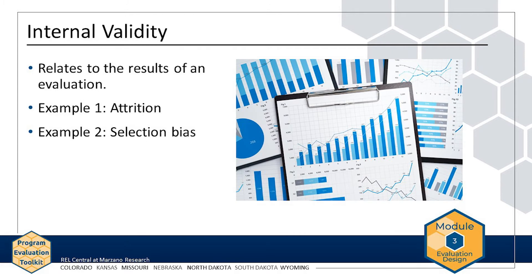First, let's look at internal validity, which relates to the results of an evaluation. At its most basic, internal validity involves asking whether the claims about the characteristics or effectiveness of a program are true. Internal validity can be threatened by problems in the design, such as not controlling for key variables in a correlational or quasi-experimental design, or by problems in data collection or analysis, such as not properly accounting for missing data.